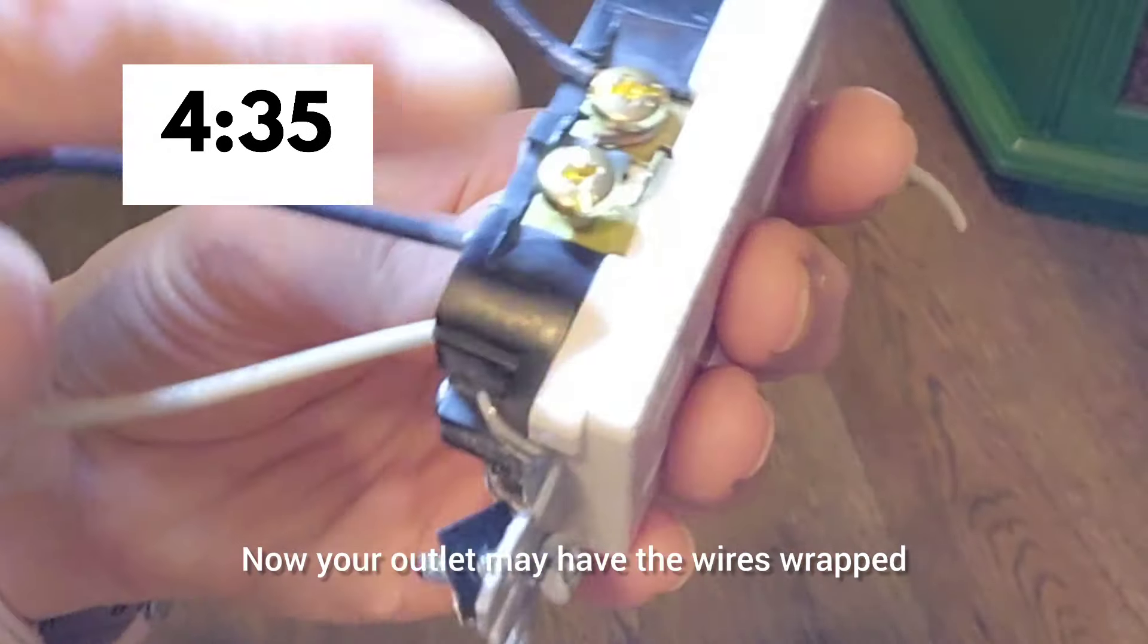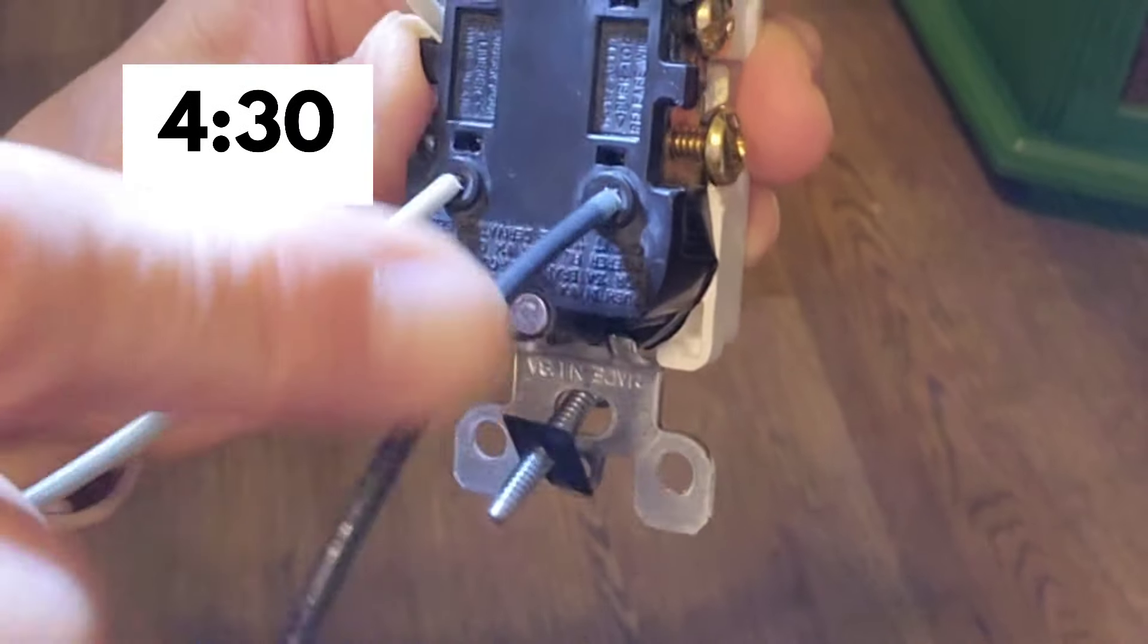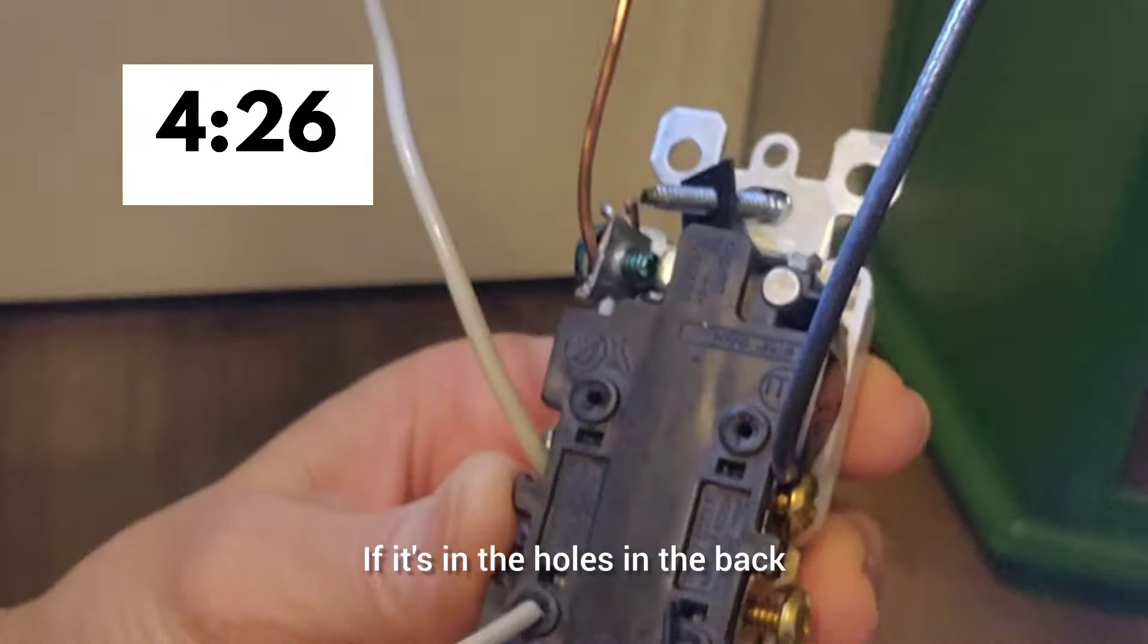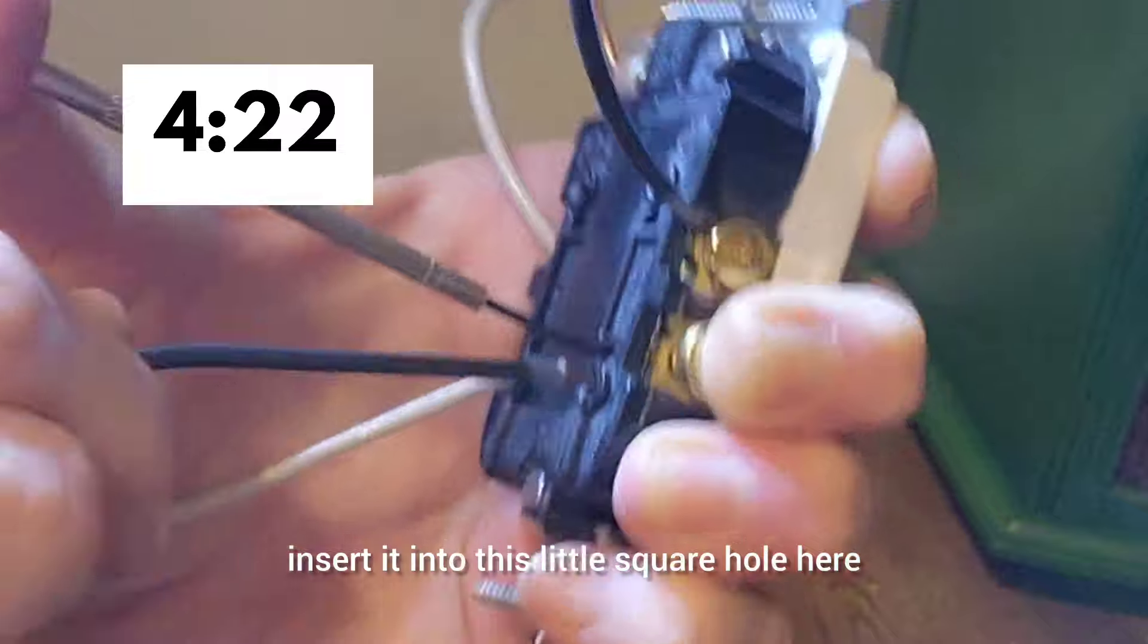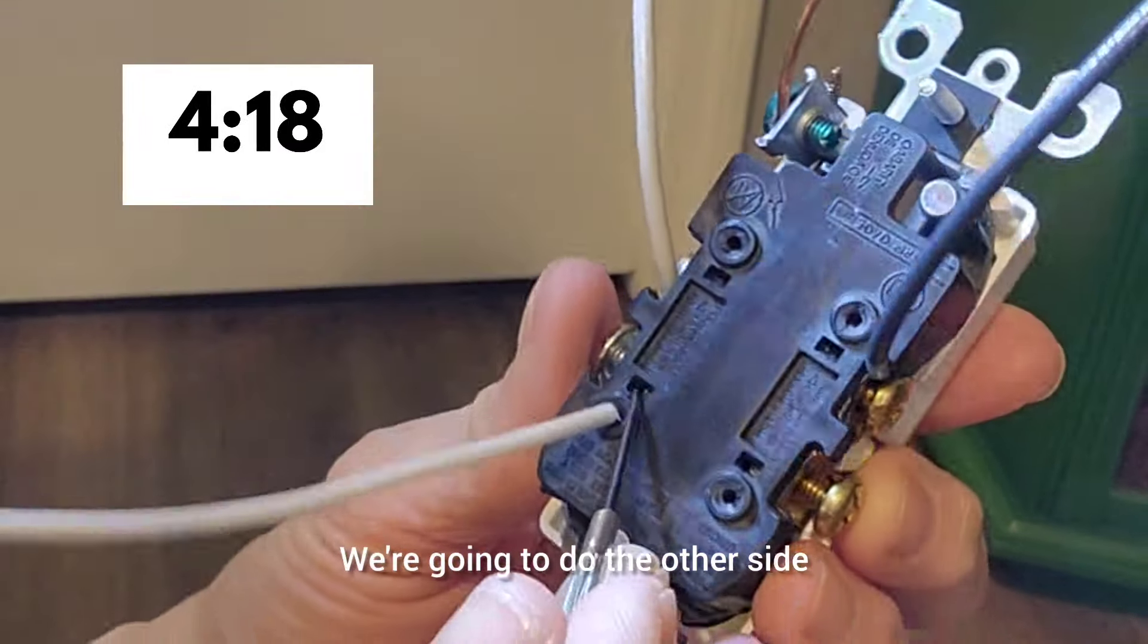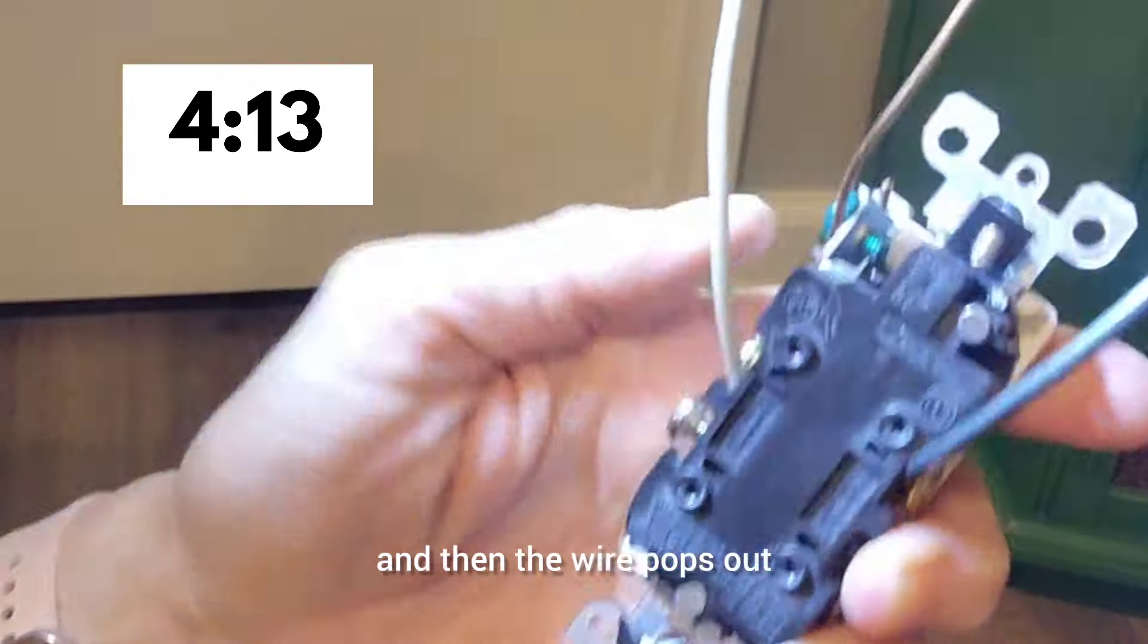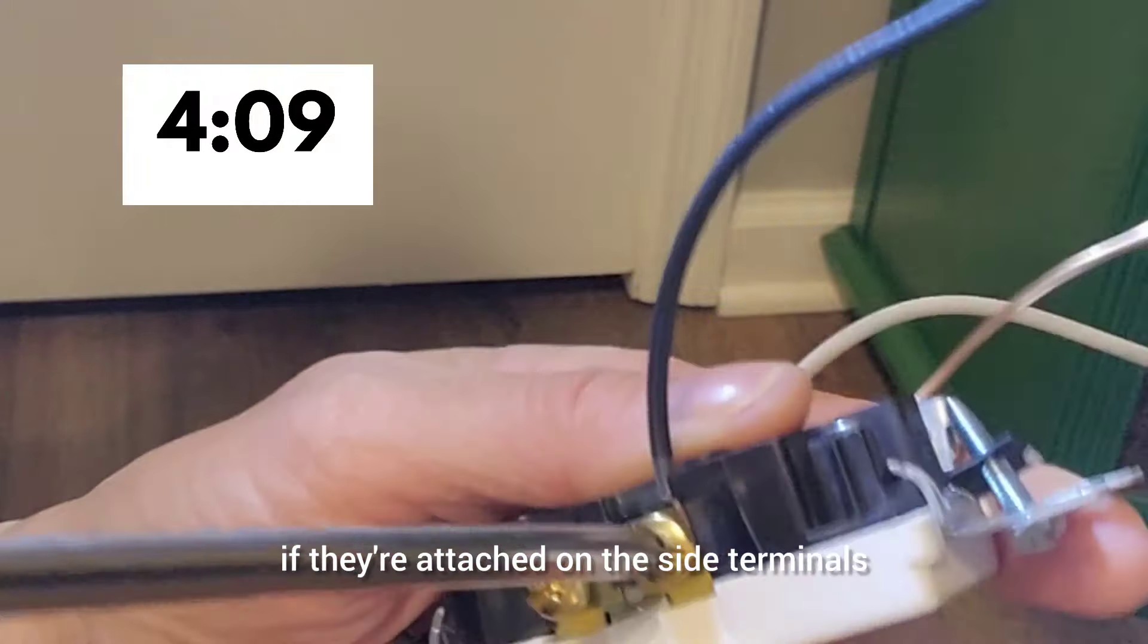Now your outlet may have the wires wrapped around the screw terminals, or they may be pushed into these holes in the back. I'm demonstrating both ways so that I can show you how to disconnect. If it's in the holes in the back, we're going to take just this tiny little flathead screwdriver, insert it into this little square hole here. And while we're inserting it, we can pull that out. We're going to do the other side. It goes into that little square hole, apply some pressure, and then the wire pops out. And then, of course, you take a screwdriver to take them off if they're attached on the side terminals.